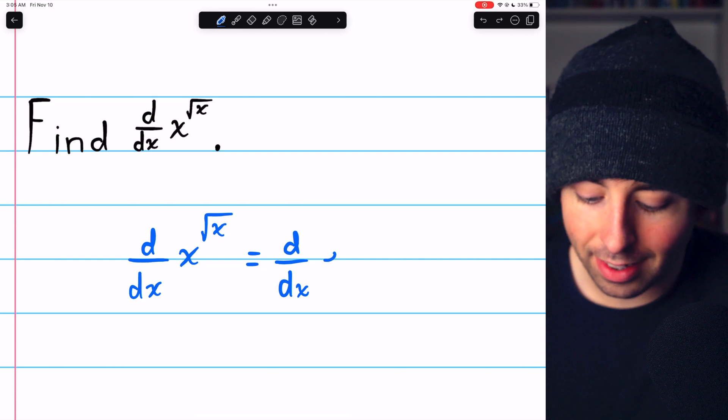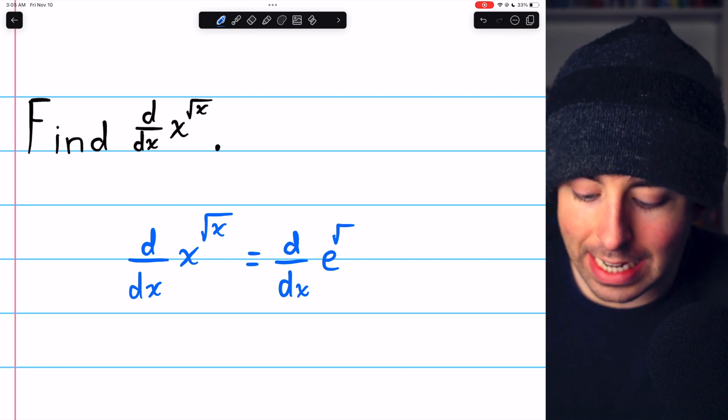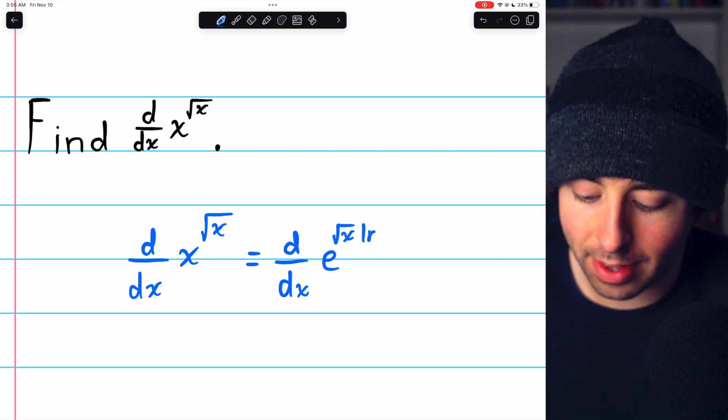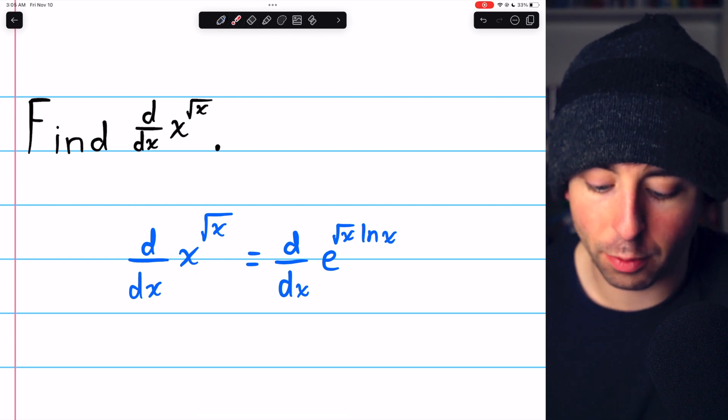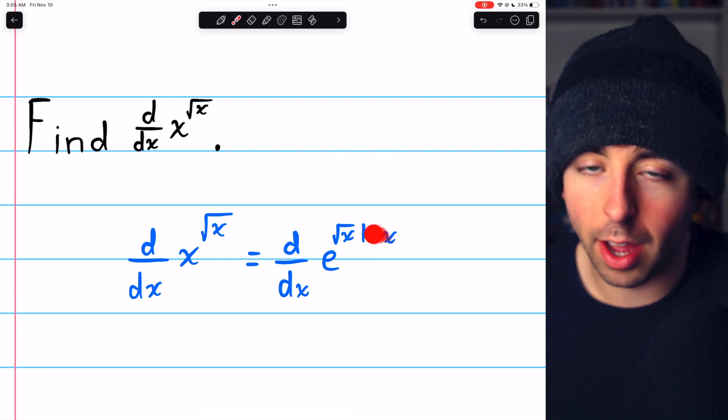x to the root x is the same as e to the root x times the natural log of x. And so the derivative of x to the root x is the derivative of this.